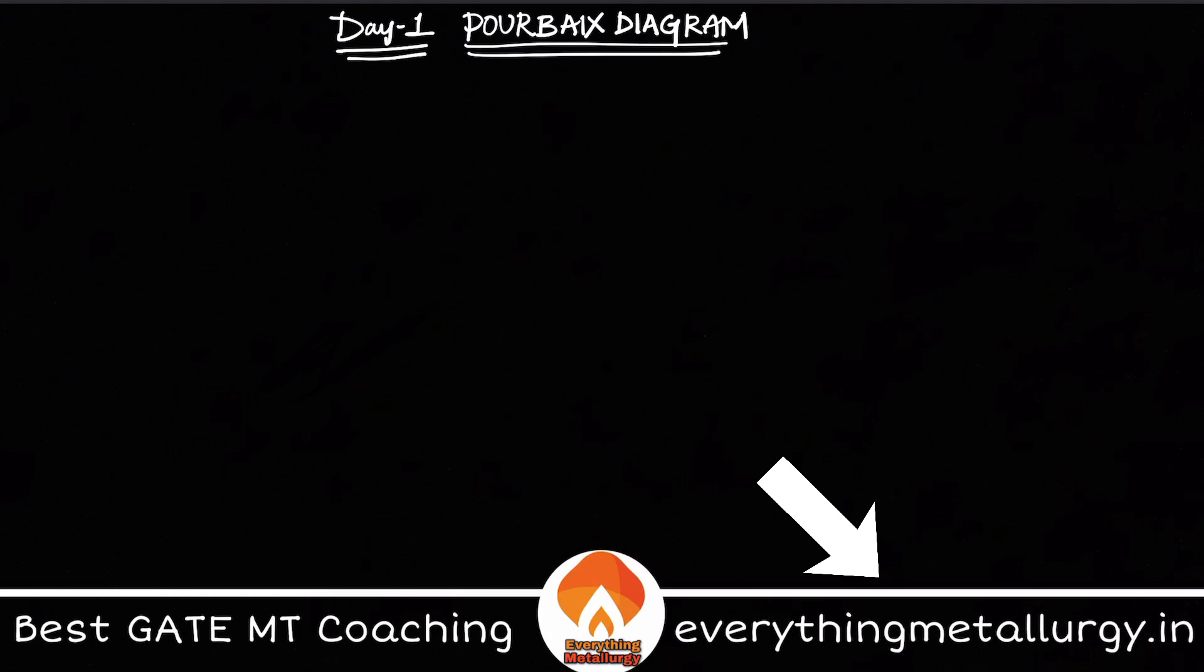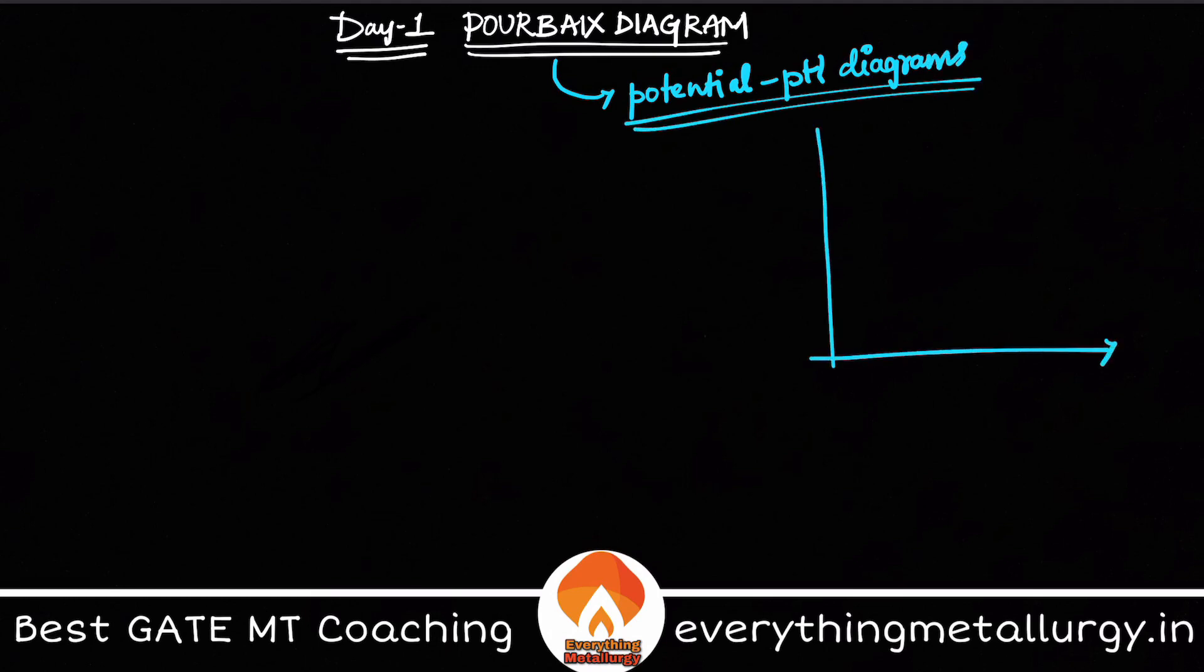Today is day one, and let's get started with the Pourbaix diagram. What is this Pourbaix diagram? This diagram is also called your potential-pH diagrams. In these particular potential-pH diagrams, it is very simple. You just take the electrochemical potential on the y-axis and your pH value on the x-axis, and you plot the various relationships.